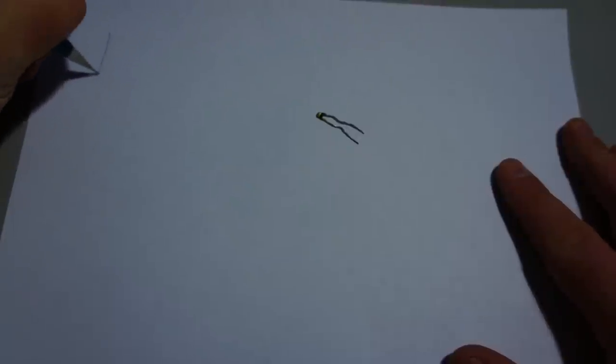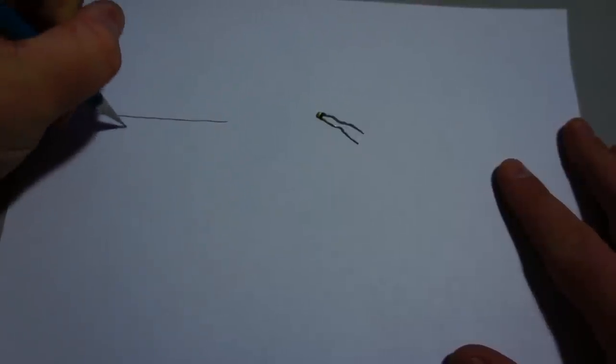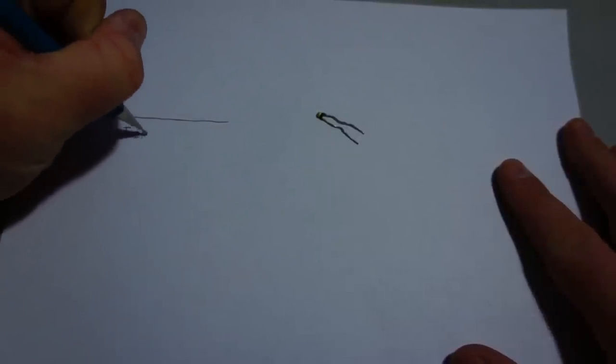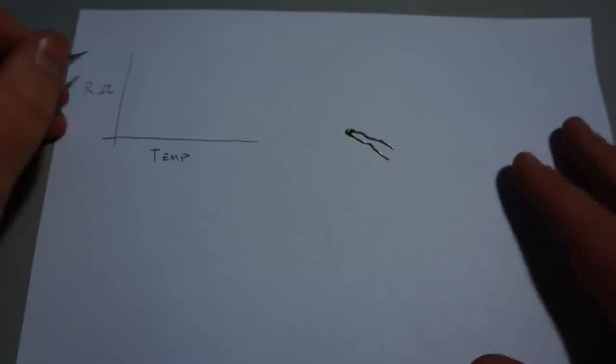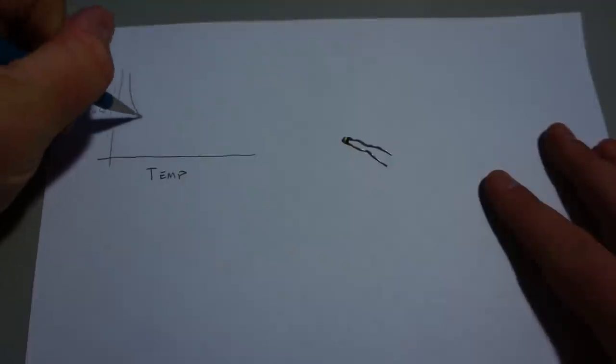It's kind of like a non-linear pattern. So if we have temperature, and then we have the resistance in ohms, you kind of get a graph that looks like that.